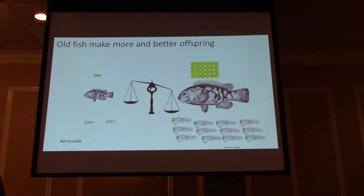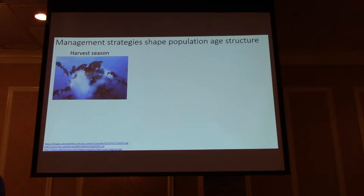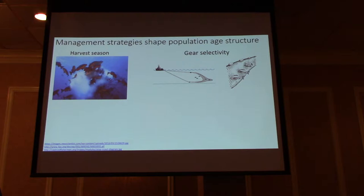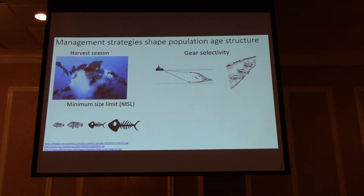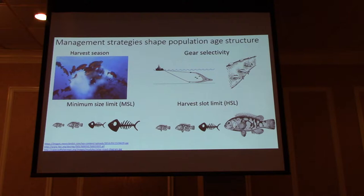Not only does fishing modify age structures, but fisheries management modifies age structures too. If we think about different tools we have as fisheries managers: you can adjust the harvest season depending on when and where fish are spawning, which can impact the age and size of fish being harvested. You can also think about gear selectivity, which similarly impacts age and size of fish caught. There are also minimum size limits and harvest slot limits, where you're specifying the age and size of fish that are going to be harvested.